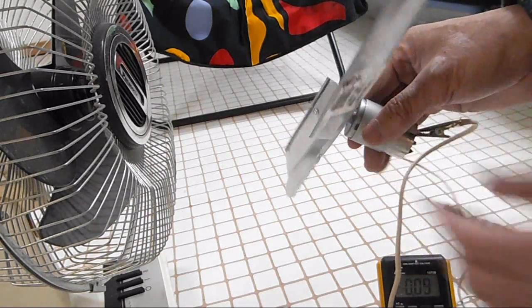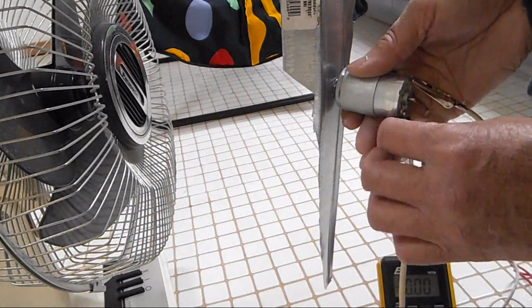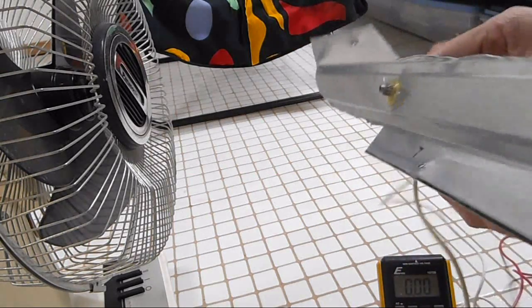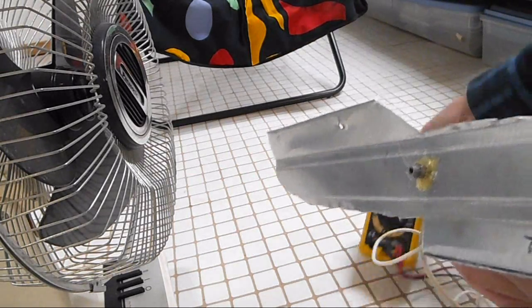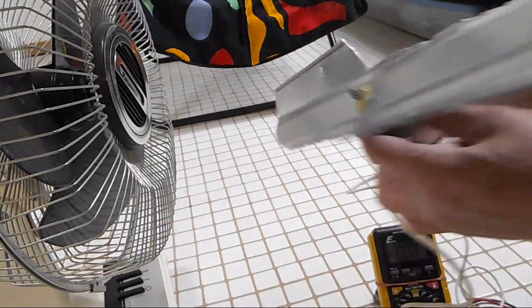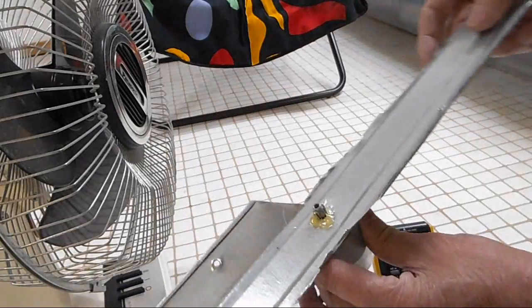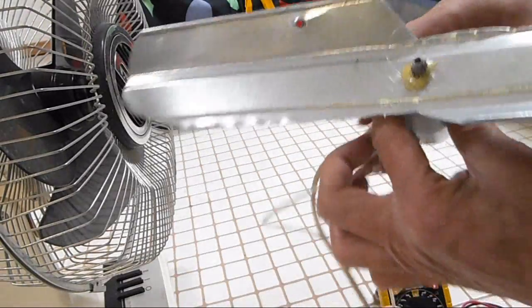I just happen to have a Schottky diode that I can use, also taken out from the Epson printer. Actually I tested it before and I was getting about 1.5 volts and you see the shape of these blades that I just made for testing purpose.